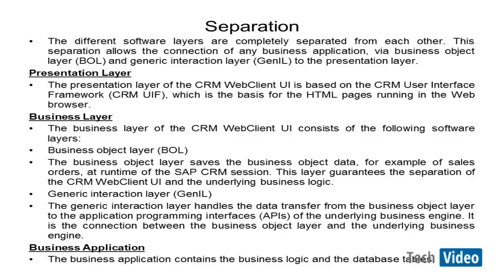When we talk about the GenIL layer, it wraps around the API layer. So to call any API methods you need to go through BOL and GenIL. When you call BOL methods, the calling is uniform — you don't need to worry about which object you are calling that particular method on. That's the beauty of the BOL layer: it provides a unique framework where you can call any method on any object without worrying about the underlying API call.